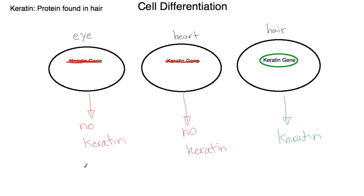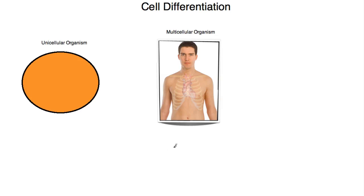The important thing to remember is that all the cells in a specific organism contain all the genes of that organism. However, not all of them will be expressed — gene expression is regulated during transcription. It is the expression of certain genes which allows cells to differentiate. This means that multicellular organisms have a huge advantage compared to unicellular organisms: a unicellular organism has to carry all its functions within one cell, whereas a multicellular organism has cells that can differentiate and specialise according to their function, making it far more efficient.